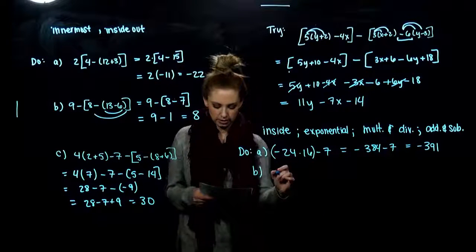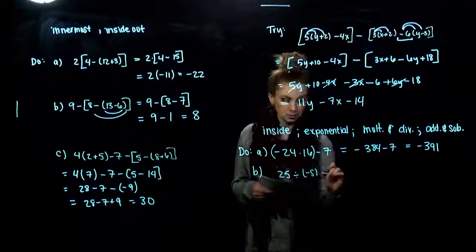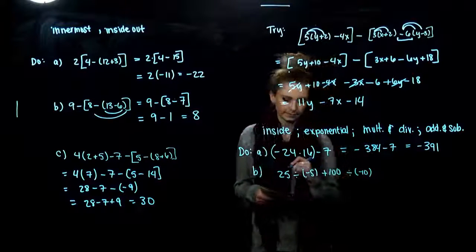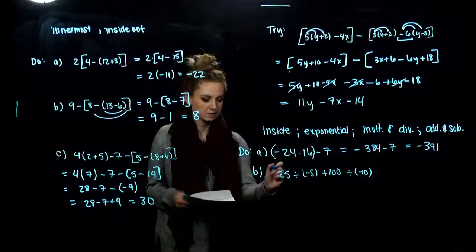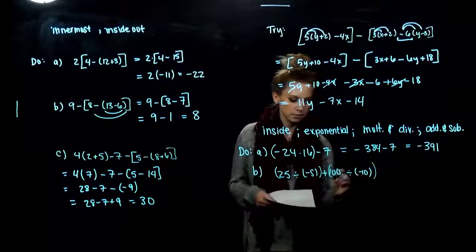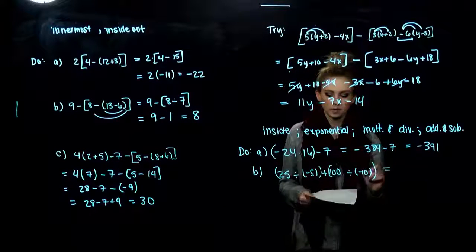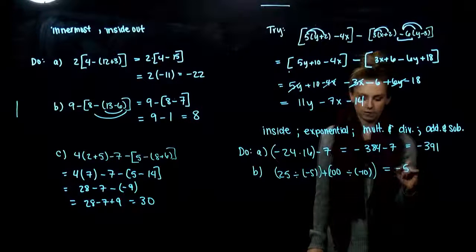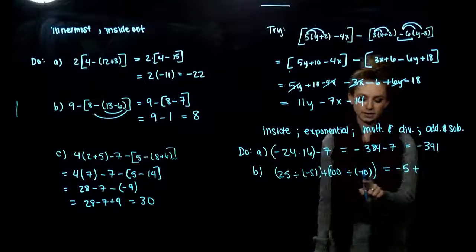For part B. 25 divided by negative 5. Plus 100 divided by negative 10. So what has to happen first? My division. Anything that I'm dividing needs to come before addition. So I need to compute what's inside of those parentheses first. So what do we got coming out? 25 divided by negative 5 gives us negative 5. And I'm adding what results from inside of these parentheses.